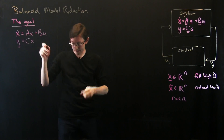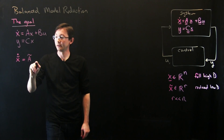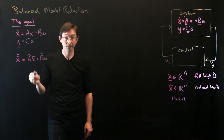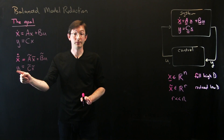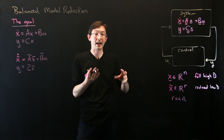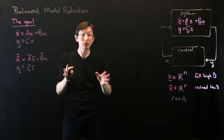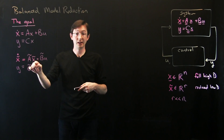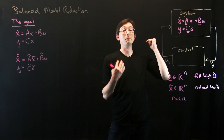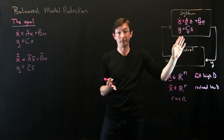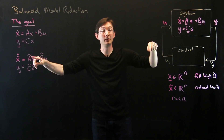We'll write the reduced system as: ẋ̃ = Ãx̃ + B̃u, and y = C̃x̃. Notice that u and y don't change — I still have the same inputs and measurements. In a car, u is the steering wheel, gas pedal, and brake; those don't change. The only thing changing is how I represent the internal dynamics of the state — in terms of x̃ instead of x — with many fewer degrees of freedom.